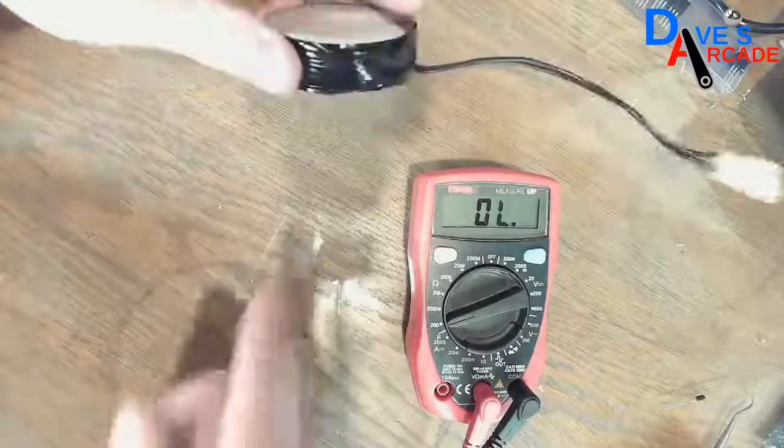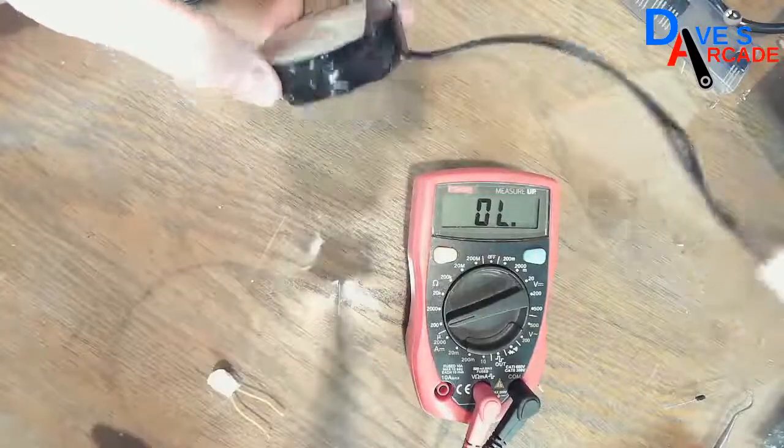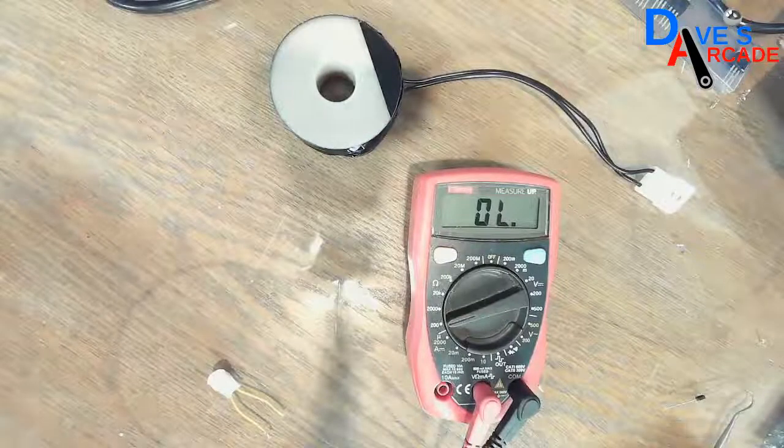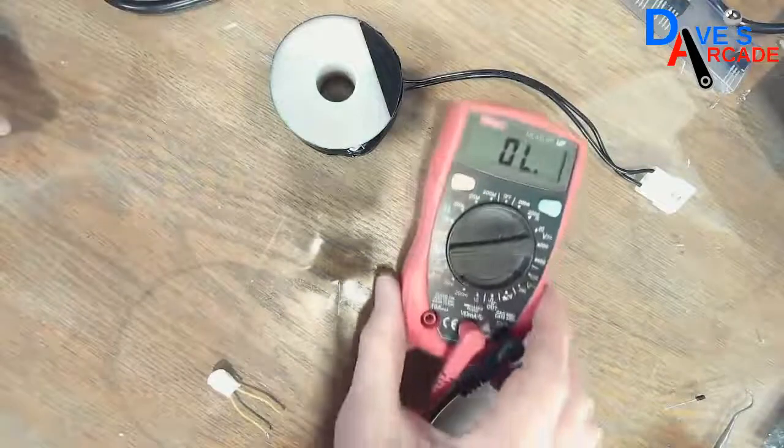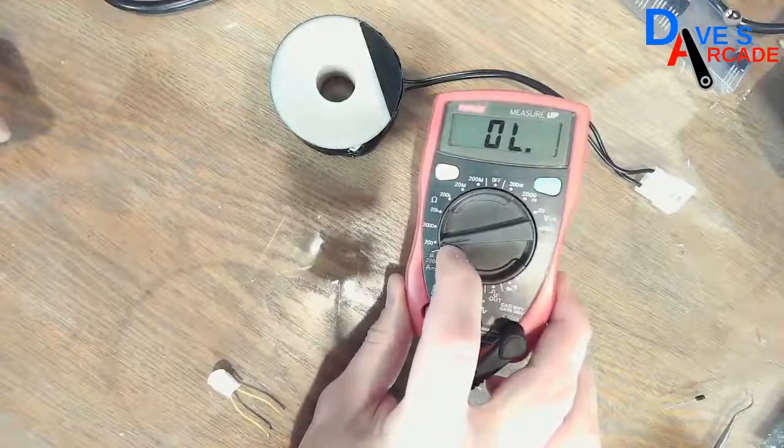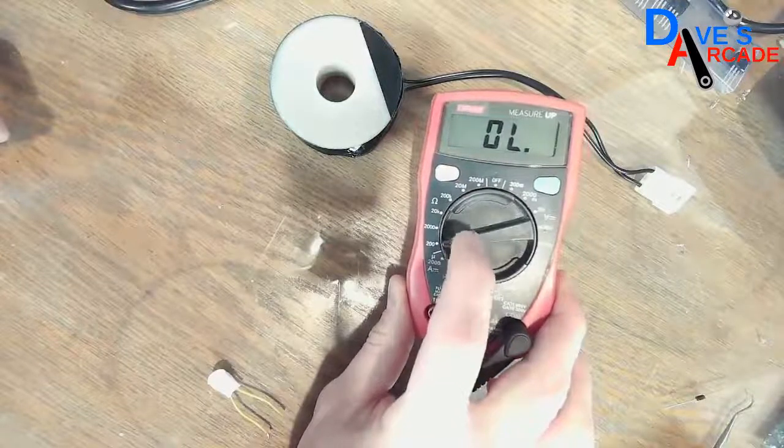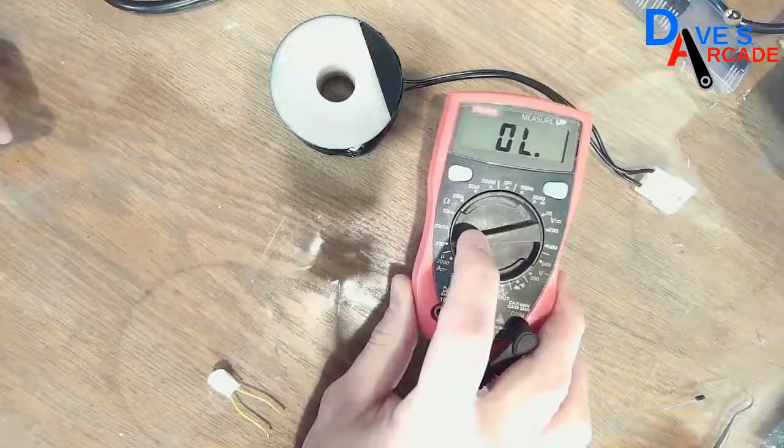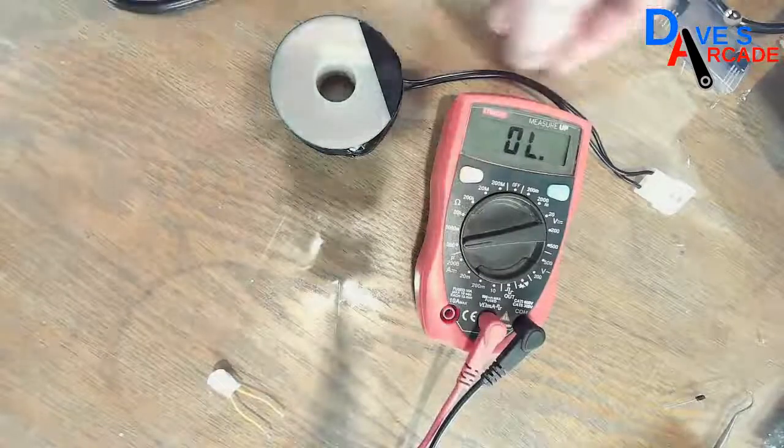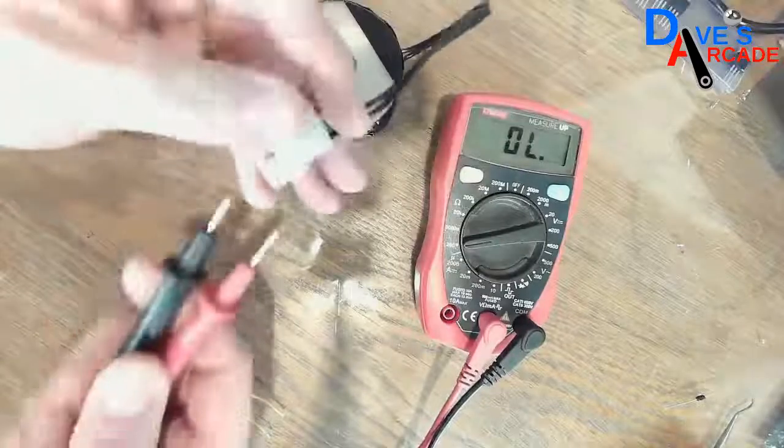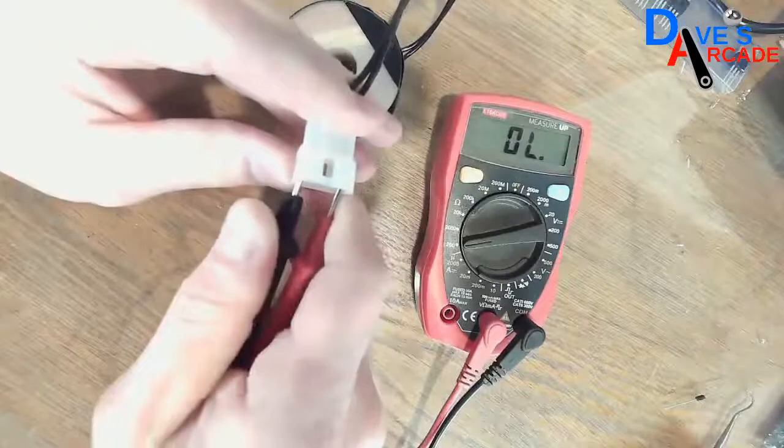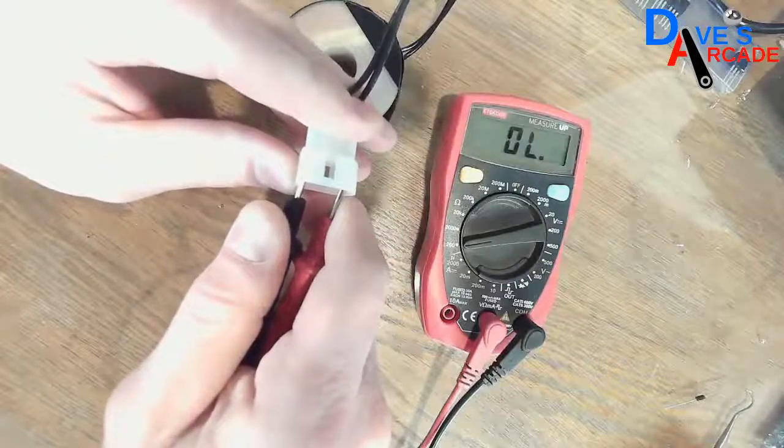To test this, set your multimeter to resistance. In this case, I'm setting it at 200 ohms, so this is going to measure any resistance that's 200 or less. You can take the leads of your pins and touch it, and this one is reading bad because the thermal protector is open.